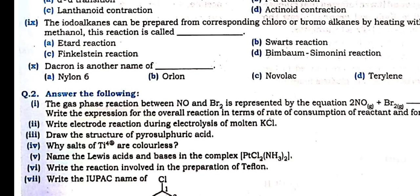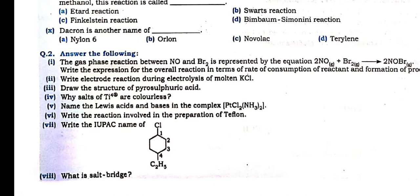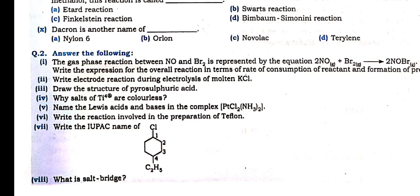Answer the following questions — very simple. You know very well. The gas phase reaction between NO and Br₂ is given. We have to express the overall rate of the reaction in terms of consumption or formation, from chemical kinetics. You write the differential rate law: that is −d[NO]/dt, or −d[Br₂]/dt, or +d[NOBr]/dt. That is the rate of the reaction. You can write 1/2 as a coefficient for the differential rate law.